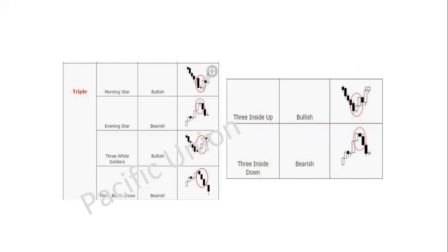Three white soldiers means when you see three bullish candles following each other from a support area — that is three white soldiers. Three black crows means when we see three bearish candles following each other from a resistance area — that is three black crows.